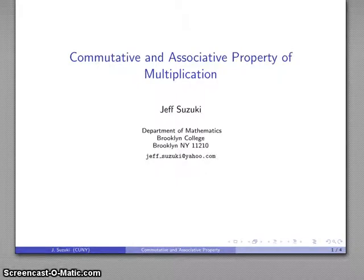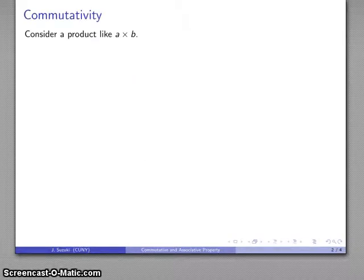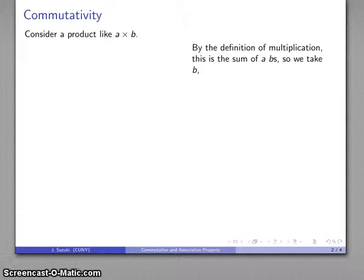So let's take a look at some of the properties of multiplication. Let's start off by considering a product like A times B. The definition of multiplication says that this is the sum of A B's.